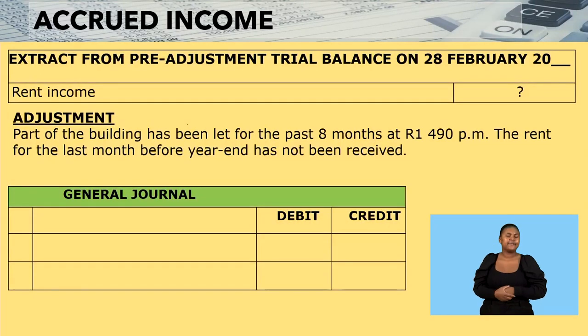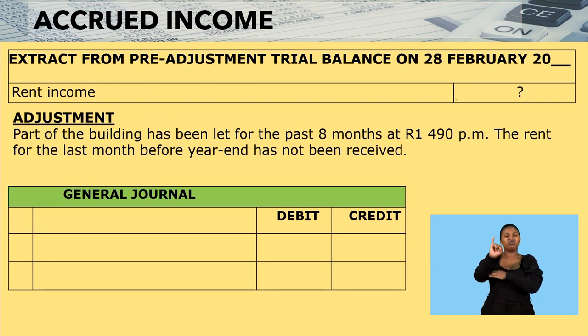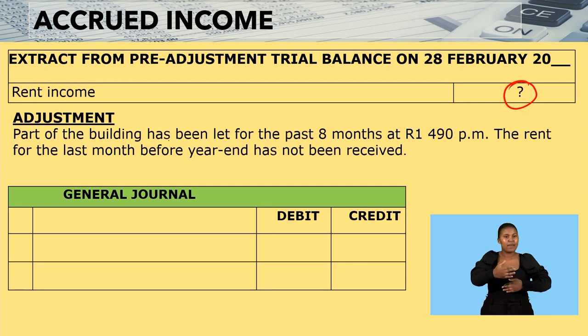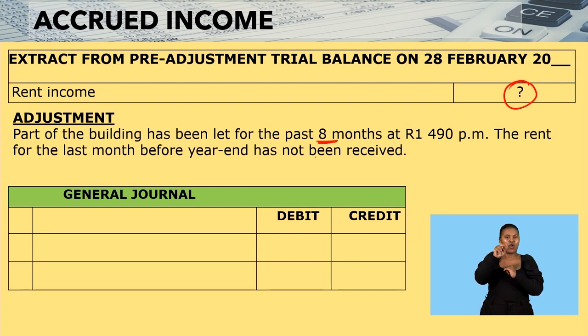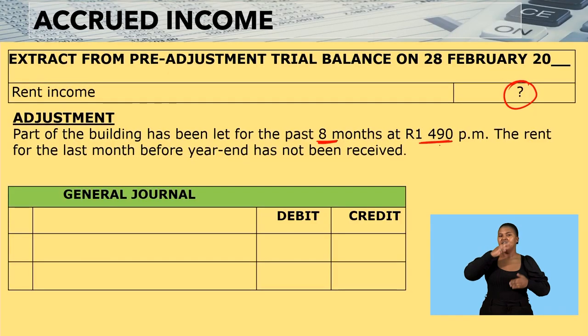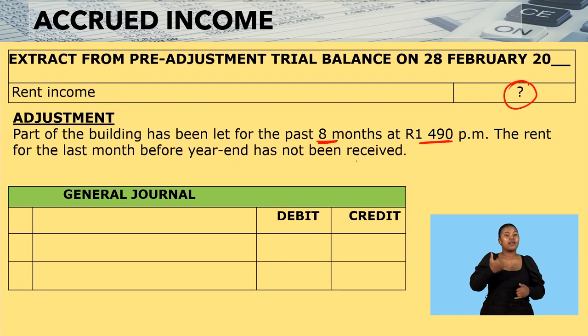The question reads: extract from the pre-adjustment trial balance on 28 February — rent income, and we are not given the amount. However, we are given an adjustment: part of the building has been let for the past eight months. The tenant has been using part of our building and paying us $1,490 per month. The rent for the last month before the year end has not been received.